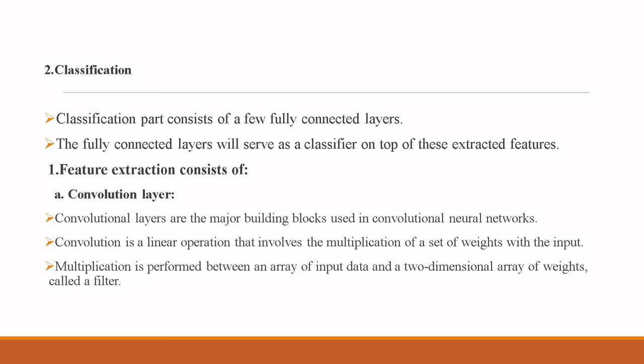Convolutional layers are the major building blocks used in convolutional neural networks. Convolution is a linear operation involving the multiplication of a set of weights with the input — performed between an array of input data and a two-dimensional array of weights called filters.